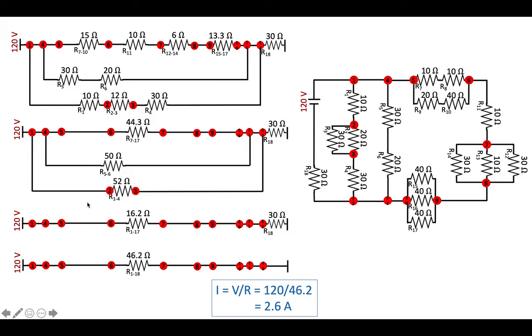So this single 46.2 ohm resistor was actually two resistors in series. And the series rule is that current is the same everywhere. So I get to take that 2.6 amps and now I get to solve for voltage and voltage is current times resistance.